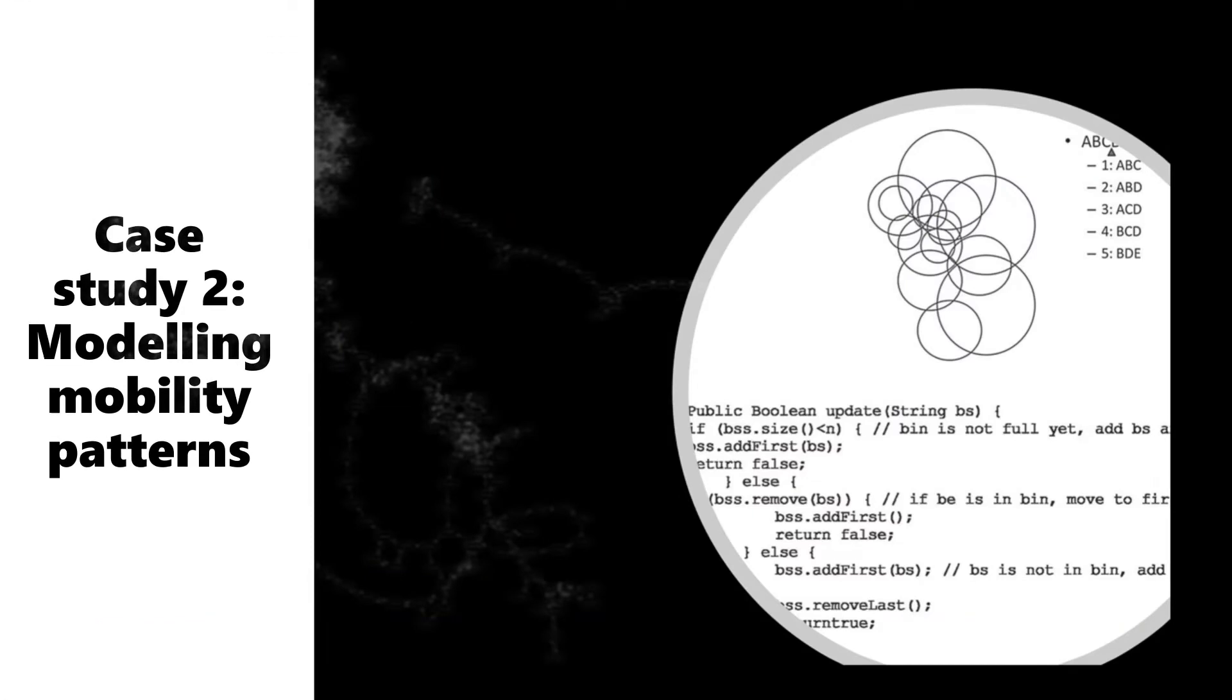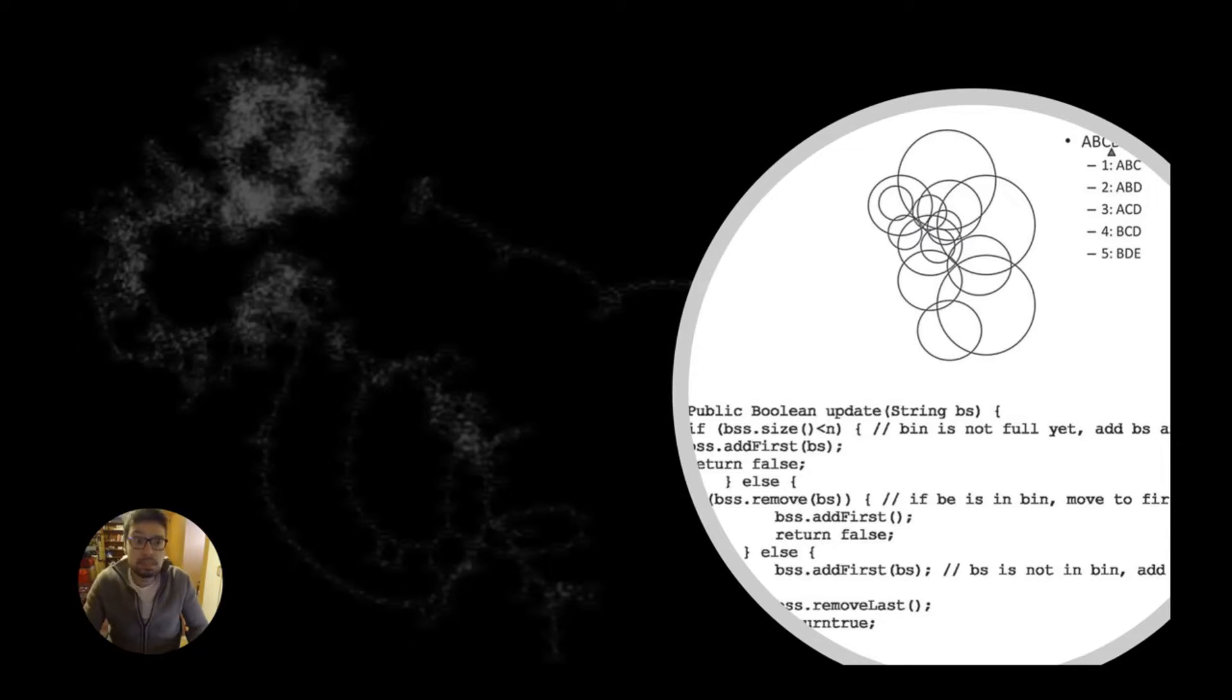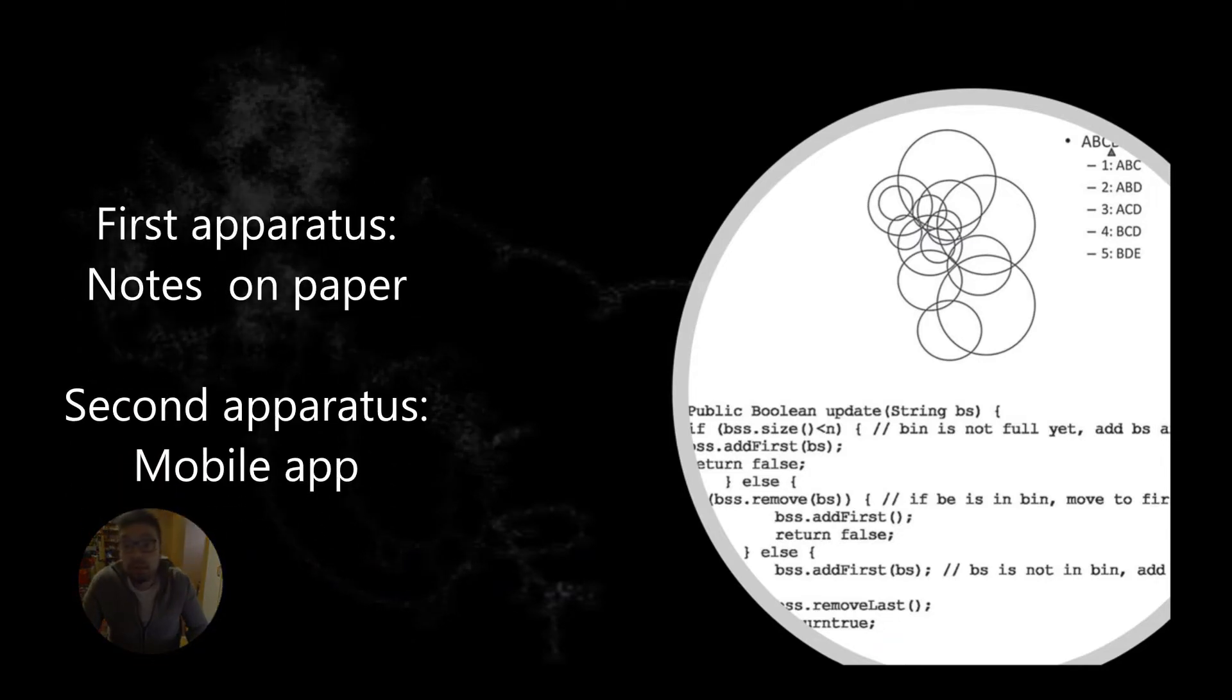In another case study, researchers working on inferring location from cell phone metadata built two apparatus for producing data. One relied on paper, aimed at producing a ground truth of the researchers' self-reported stops and routes.